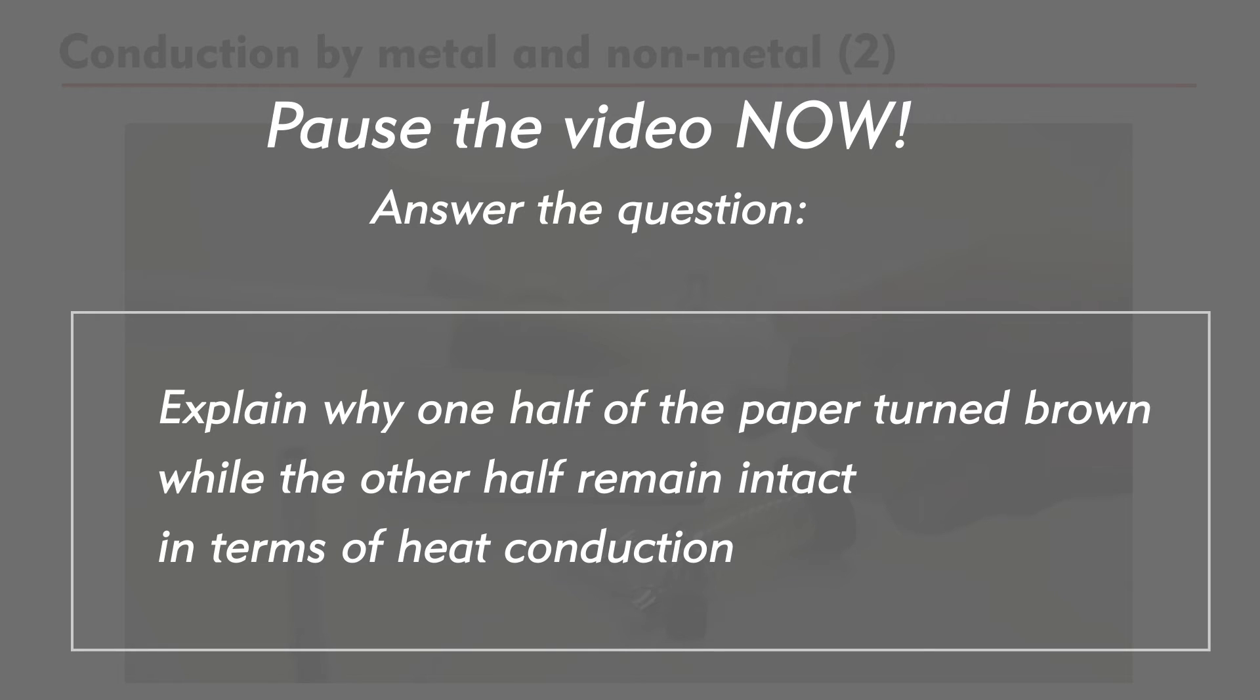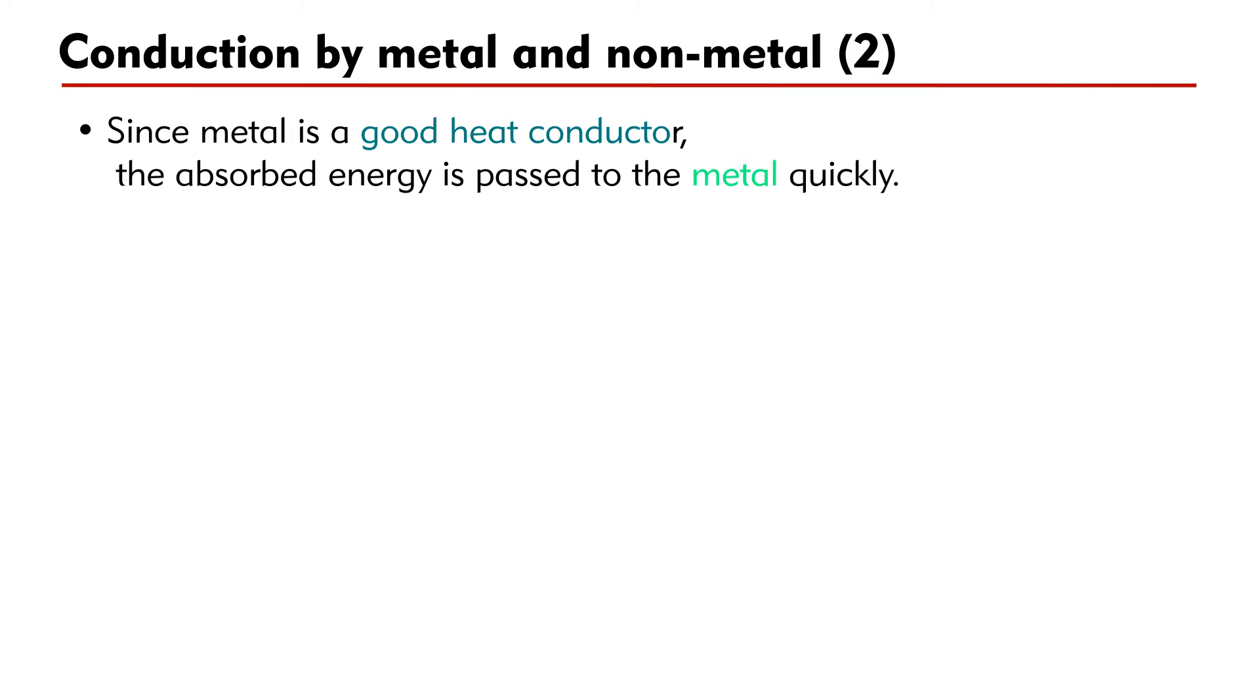Can you explain this in terms of heat conduction? Pause the video for a while and answer the question. Since metal is a good heat conductor, as soon as the paper is heated, the absorbed energy is passed to the metal quickly. Therefore, the temperature of the paper remains low.